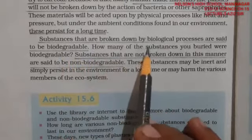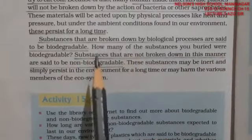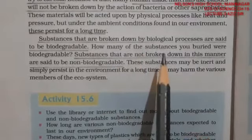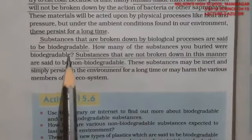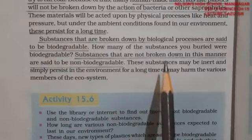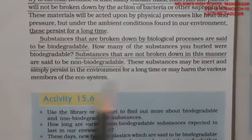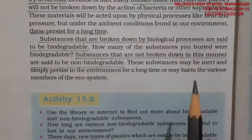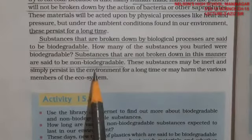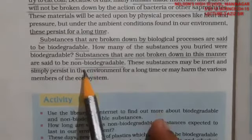Substances that can be broken down by biological processes — that is, by enzymes — are called biodegradable. Enzymes are capable of breaking down organic biological substances. But substances that cannot be broken down by any enzymes and remain on the earth are called non-biodegradable substances. Examples include plastic and glass — glass remains on the earth for a very long time. These are problematic because we are making more and more of them.